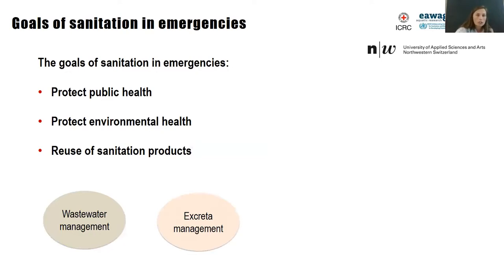Looking at the goals of sanitation in emergencies, the first goal we have in mind is to protect public health. However, there are increasing conflicts between public health and environmental health — for example, a vacuum truck disposing fecal matter away from a refugee camp can pollute the environment somewhere else. A third goal is to create systems where you can reuse sanitation products, managing wastewater or excreta in ways that create something valuable. So beyond public health, there are initiatives focusing on environment and sanitation products.